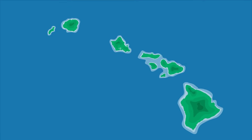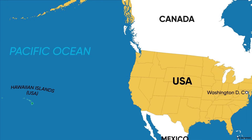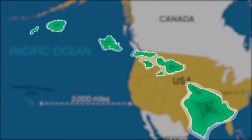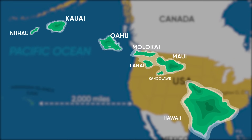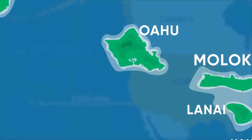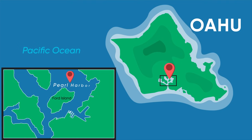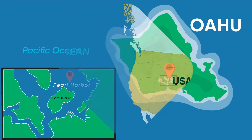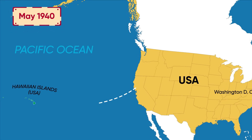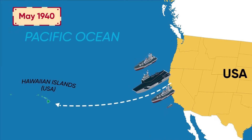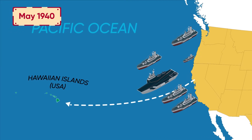Why was Pearl Harbor important? Located near the center of the Pacific Ocean, approximately 2,000 miles from the US mainland, Hawaii is said to be a perfect location to set up a naval base to refuel and supply. Pearl Harbor is also one of the largest and best natural harbors in the Pacific Ocean. In May 1940, Roosevelt moved the Pacific Fleet to the naval base of Pearl Harbor as a show of American power.